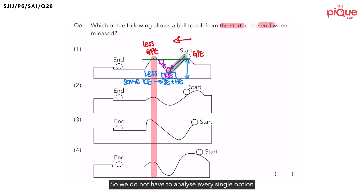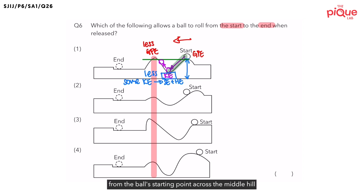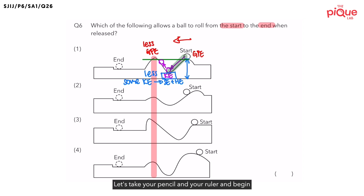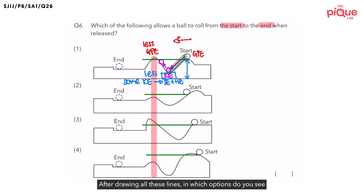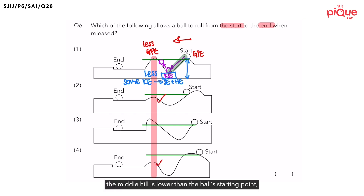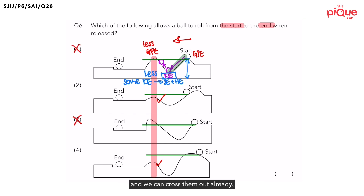The key to doing this question is to think about the height of the middle hill. In order for the ball to have enough energy to roll over the hill in the middle, the hill must be at a height lower than the ball's starting point. Draw a line from the ball's starting point across the middle hill for all options and spot the middle hill that is lower than the ball's starting point. After drawing these lines, we see that in options 2 and 4, the middle hill is lower than the ball's starting point, so options 1 and 3 can be crossed out.